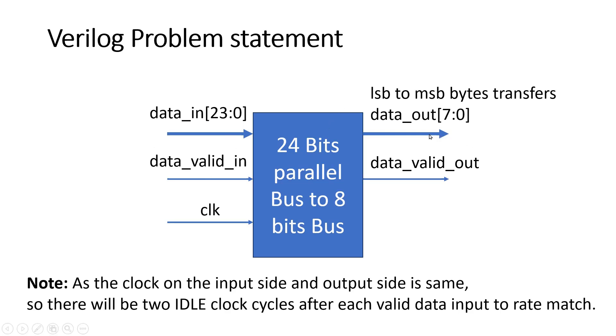Now let us see the output side. It has one data output which is 8 bits long, along with one valid signal which is data_valid_out. This is a one-bit signal.